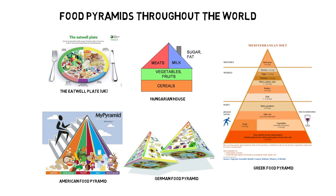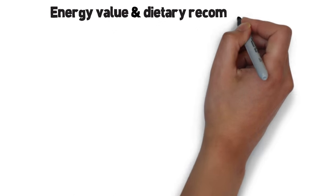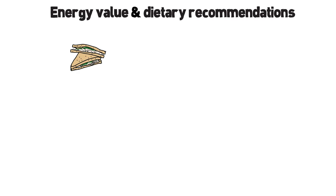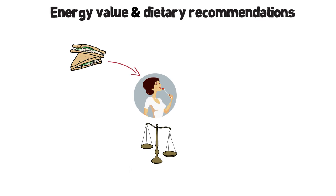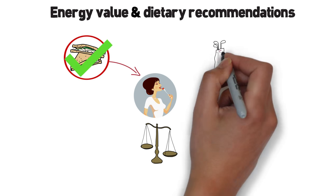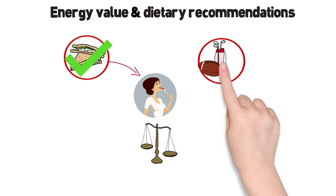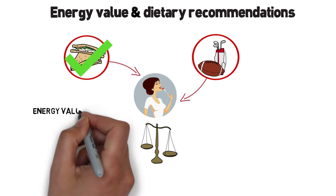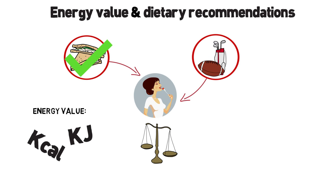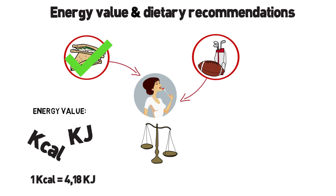Energy Value and Dietary Recommendations. To maintain good health, nutrients should be provided to ensure the body's needs are met. Nutrition is the intake of food considered in relation to the body's dietary needs. An adequate, well-balanced diet combined with regular physical activity is a cornerstone to avoid the emergence of nutritional pathology. Energy value is expressed in kilocalories or in kilojoules, knowing that 1 kilocalorie is equal to 4.19 kilojoules.